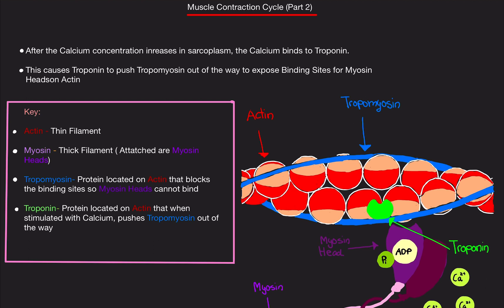I have a key here. There are four things we need to go over: we have actin, we have myosin, we have tropomyosin, and we have troponin.